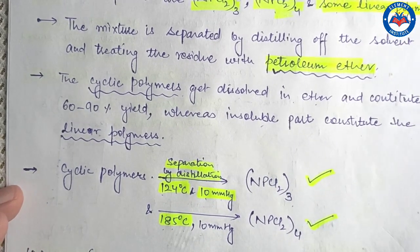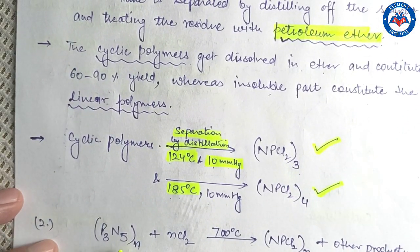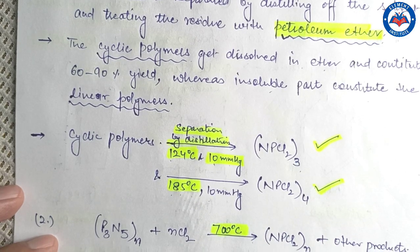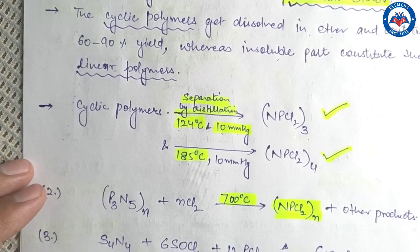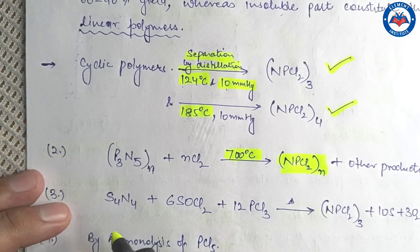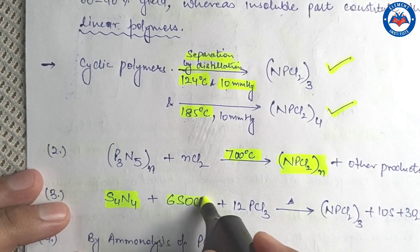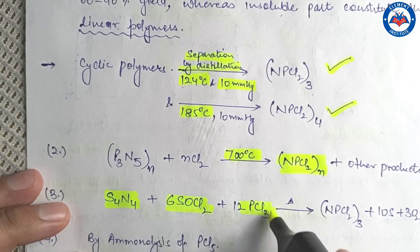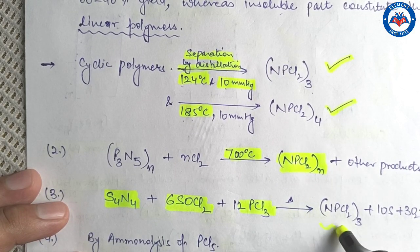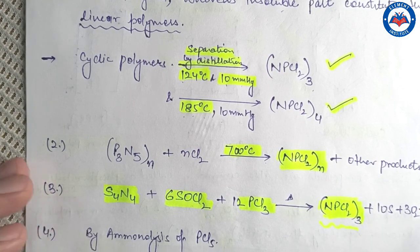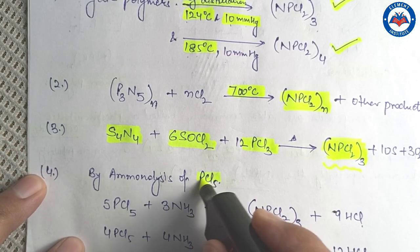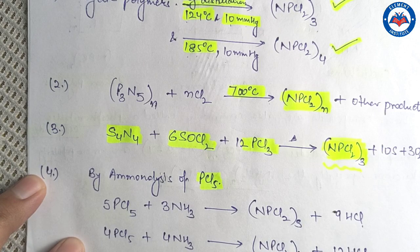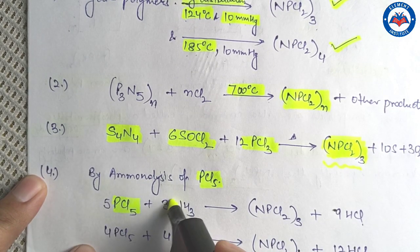Another method is heating polymeric phosphonitride in excess chlorine at 700 degrees Celsius to obtain polyhalophosphazenes. Similarly, heating a mixture of sulfur nitride fluoride with thionyl chloride and phosphorus trichloride gives the cyclic trimer as a major product. Next is the preparation by ammonolysis of phosphorus pentachloride.